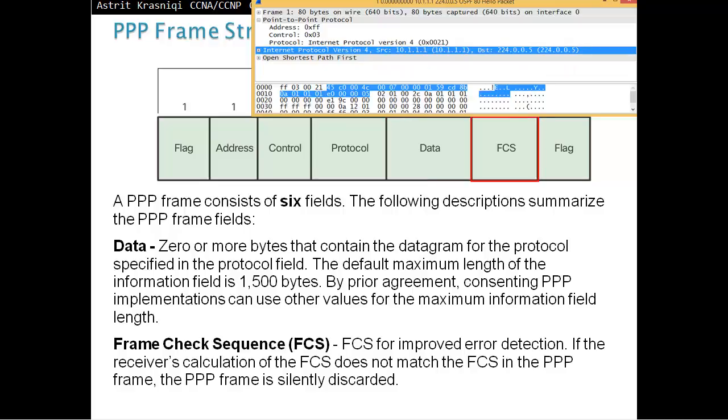And then, last one is a frame check sequence, FCS, for improved error detection. If the receiver calculation of the FCS does not match the FCS of the PPP frame, the PPP frame is silently discarded.